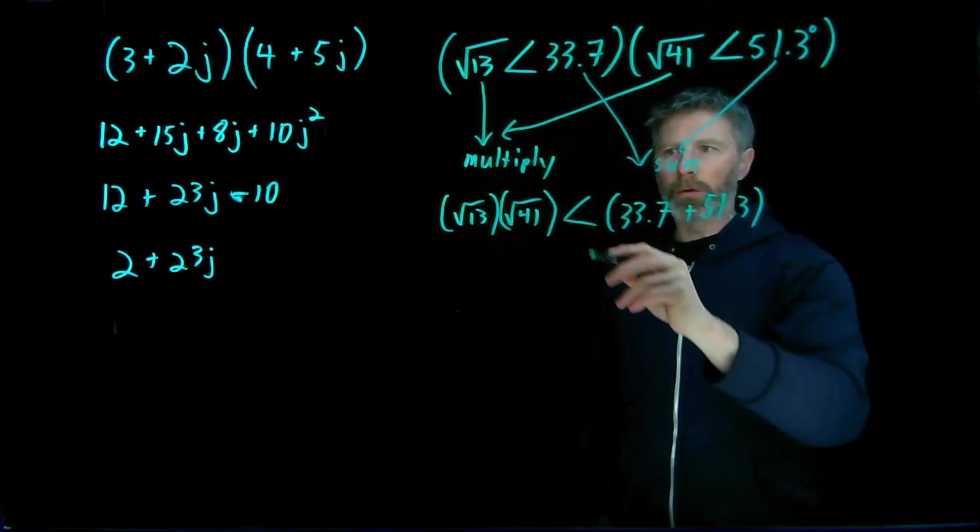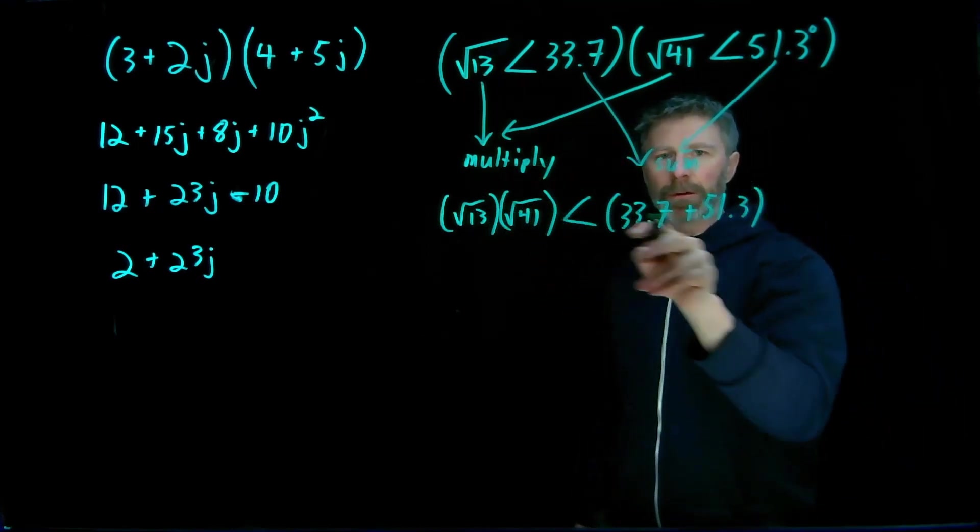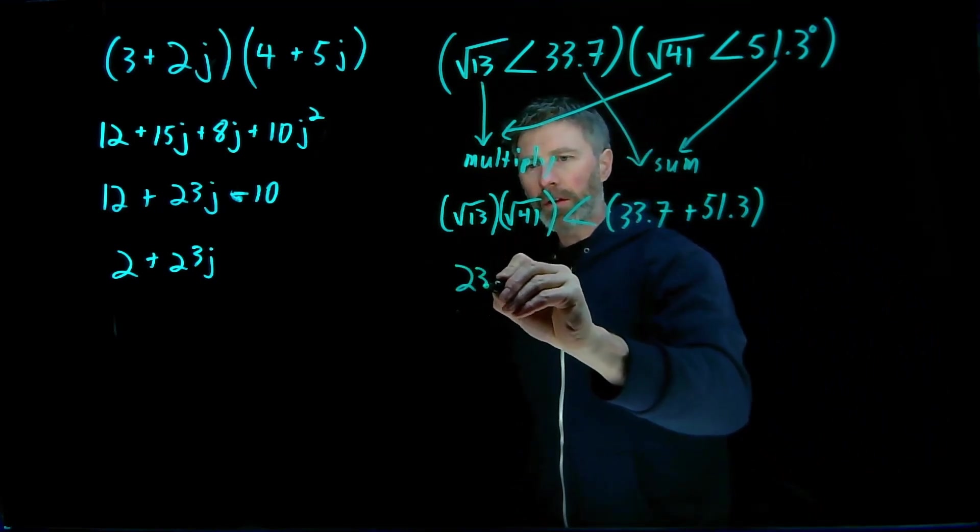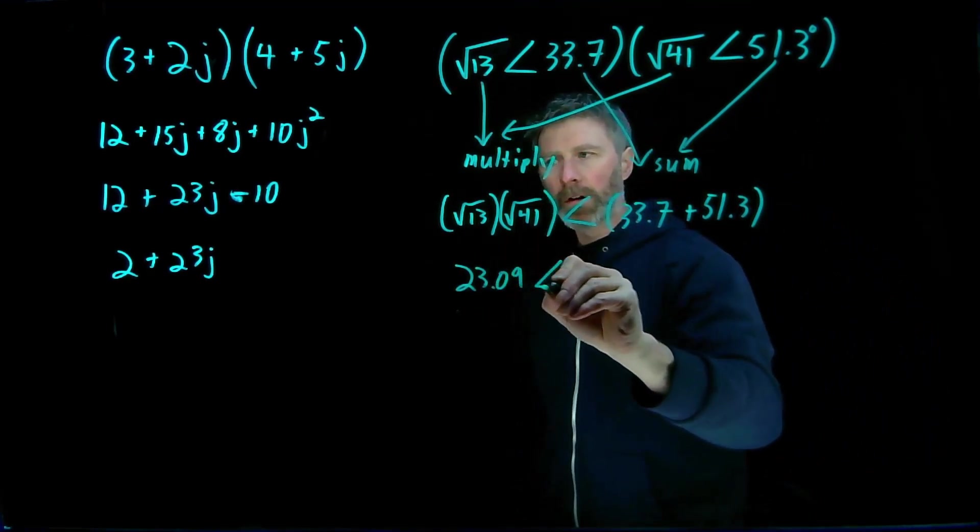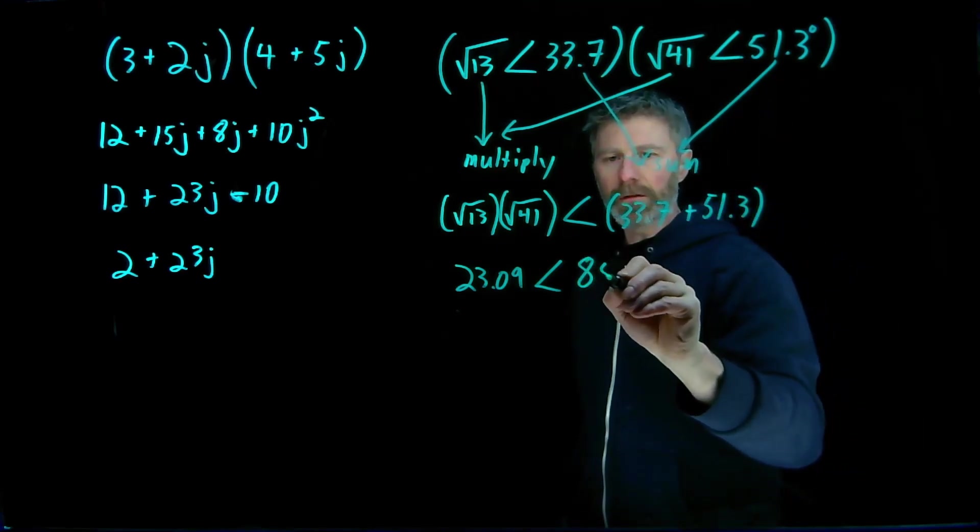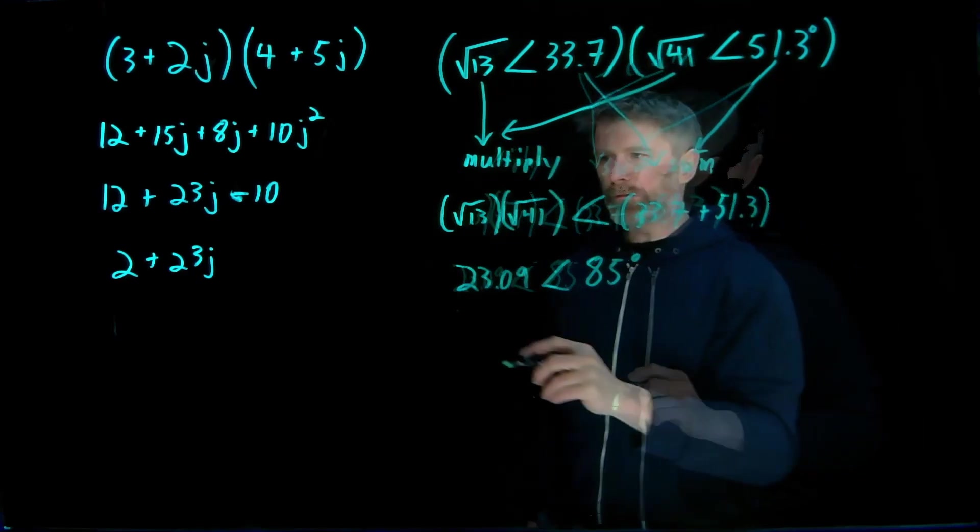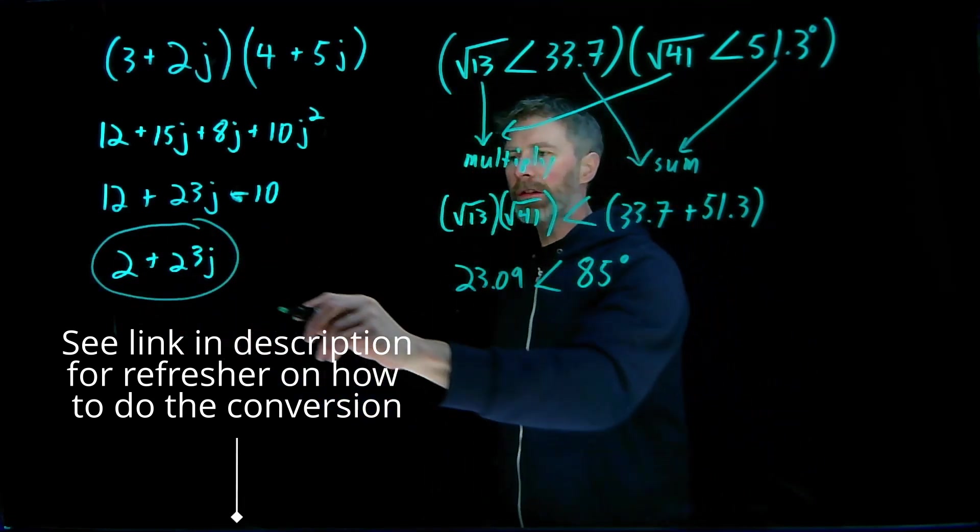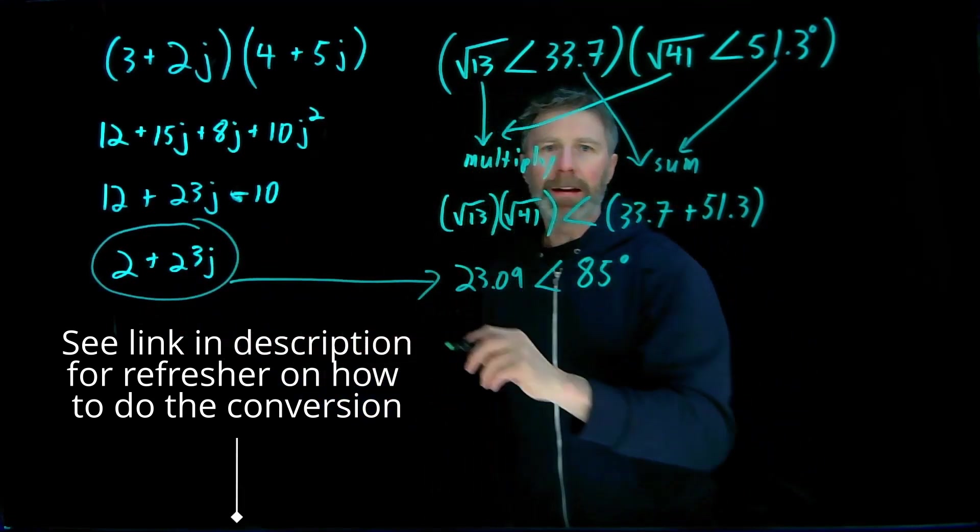And I can work this all out to get a single number for this and a single number for this. And I end up with 23.09 with an angle of 85 degrees. And if I do the conversion from the rectangular coordinates there into polar coordinates, I end up with that exact same value.